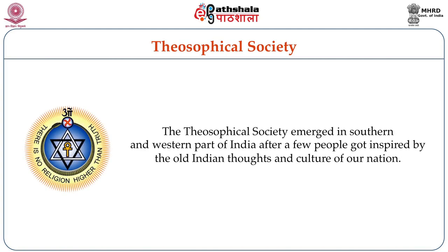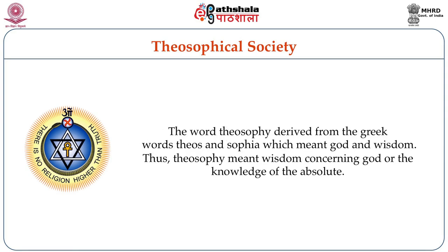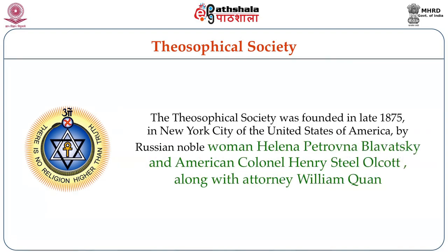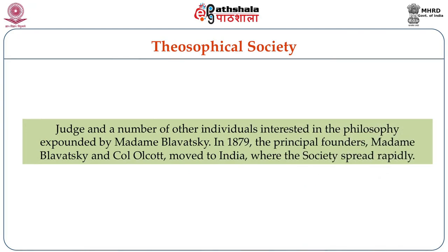The next organization is the Theosophical Society, which emerged in southern and western India after people got inspired by old Indian thoughts and culture. The word Theosophy is derived from the Greek words Theos and Sophia, meaning God and Wisdom — thus Theosophy means wisdom concerning God or knowledge of the Absolute. The Theosophical Society was founded in late 1875 in New York City by Russian noblewoman Helena Petrovna Blavatsky and American Colonel Henry Steel Olcott, along with Attorney William Q. Judge and others interested in the philosophy expounded by Madame Blavatsky. In 1879, the principal founders Madame Blavatsky and Colonel Olcott moved to India, where the society spread rapidly.